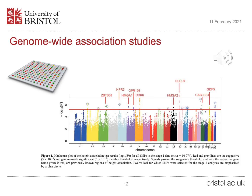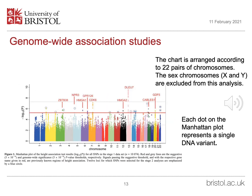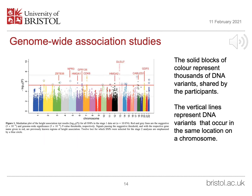The results of GWAS studies are often presented as a chart called a Manhattan plot. The Manhattan plot combines together the results of all of the participants in the study. The chart is arranged according to the order of the 22 pairs of chromosomes in the genome. The sex chromosomes X and Y are excluded from the analysis. Each dot on the Manhattan plot represents a single DNA variant, and the solid blocks of colour represent thousands of DNA variants shared by the participants.